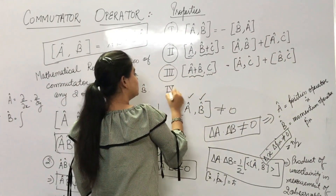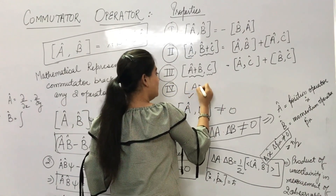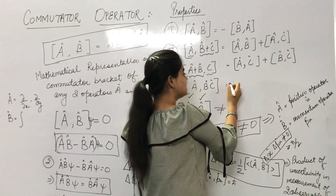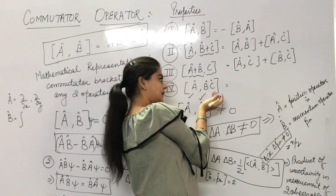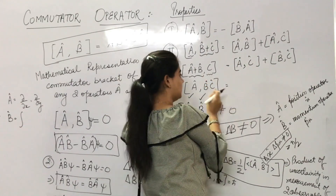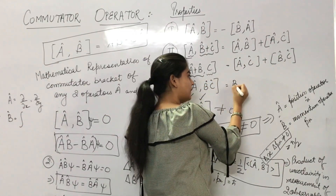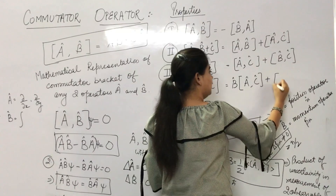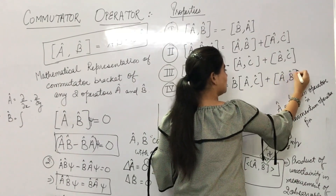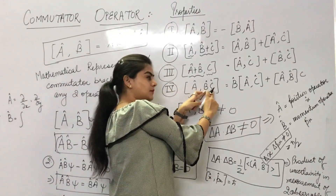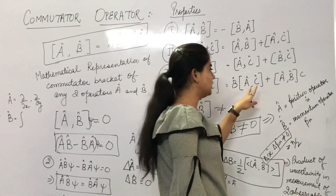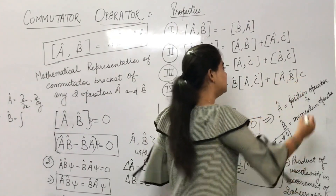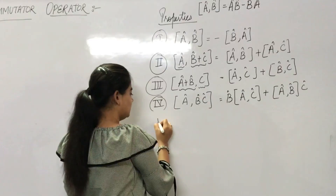Fourth property: [A, BC] = B·[A, C] + [A, B]·C. For this property, remember: B comes first, so write B first, then [A,C]; plus [A,B] into C. Fifth property: [AB, C] = A·[B, C] + [A, C]·B. Here write A first, then [B,C]; plus [A,C] into B.